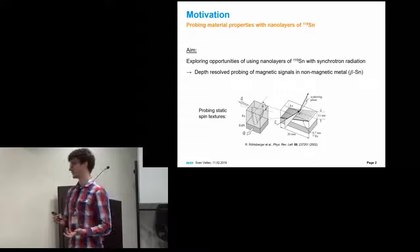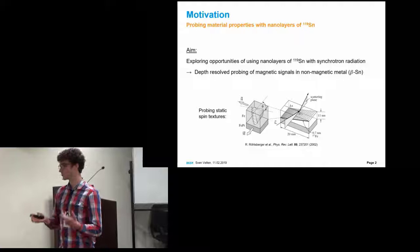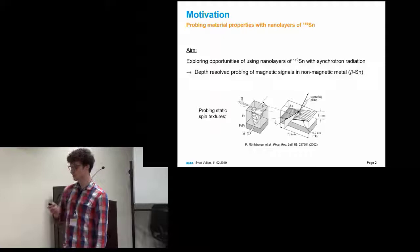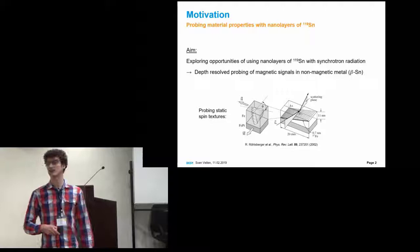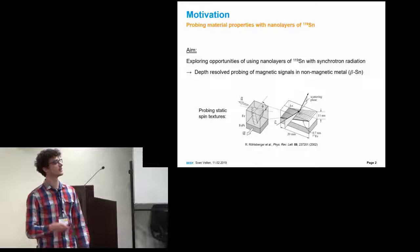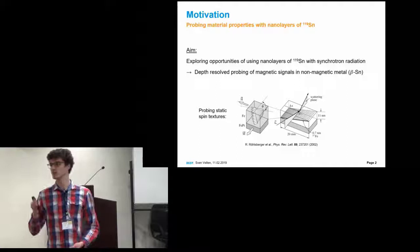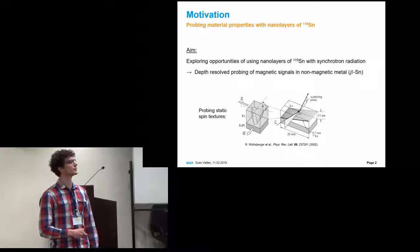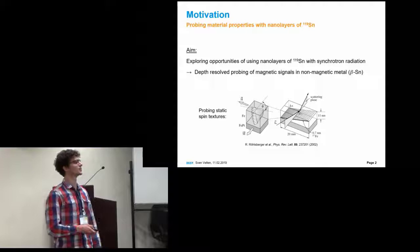Normally, in thin-film experiments with nuclear resonance scattering, one typically uses iron 57 layers. For example, here a group probes static spin textures by putting an ultra-thin iron 57 layer as a wedge type inside of such a magnetic structure, and they hit the sample under different lateral positions and probed the orientation of the magnetic hyperfine field. Thus, they were able to resolve the spin texture here.